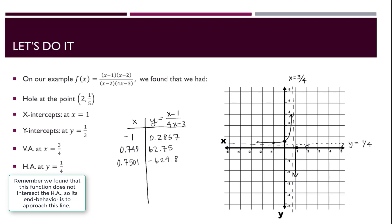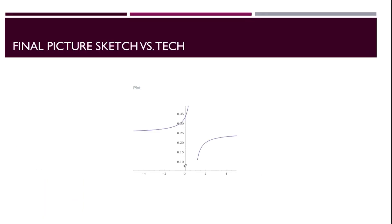This is our sketch. Now let's compare it to what technology would generate. When graphing these functions, technology will not do a great job showing asymptotes — you won't see clear asymptotes drawn. Technology also does not clearly display holes; no matter how far you zoom in on a hole, especially on the TI-84, you won't see a hole sketched there. That's all for this video. If you have any interest in slant asymptotes or more advanced rational functions, let me know in the comments and I'll consider making a part two. See you next time.